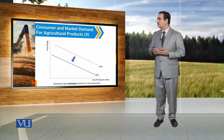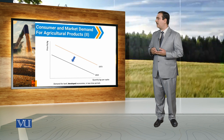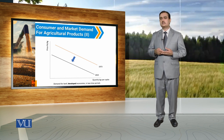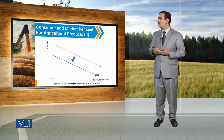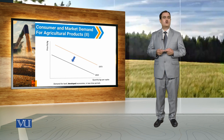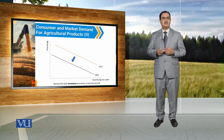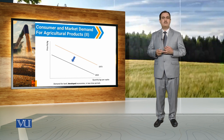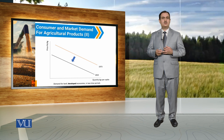In this diagram, we are reporting demand for beef in developed economies under two time periods. In 1973, demand for beef is relatively high compared to demand for beef in 2023. So over this period from 1973 to 2023, in developed economies, there is a decrease in demand for beef. This decrease may be because of awareness about red meat and the negative consequences of red meat on the health of consumers.